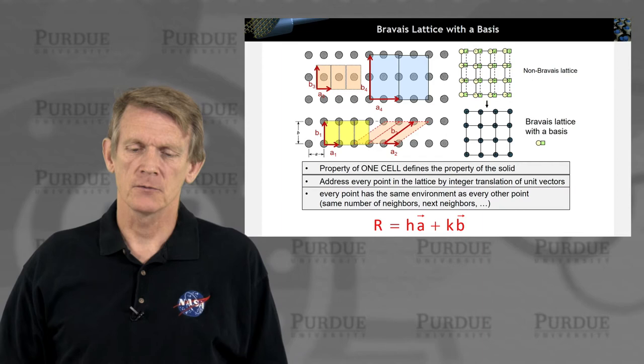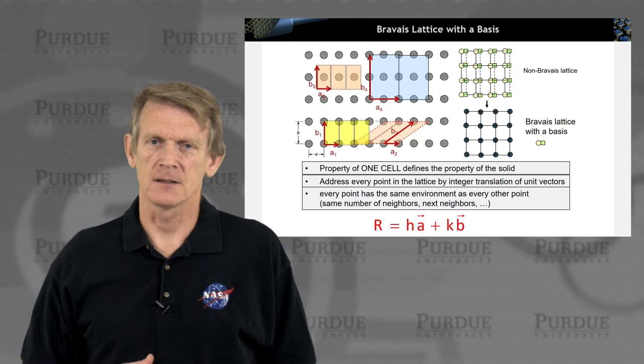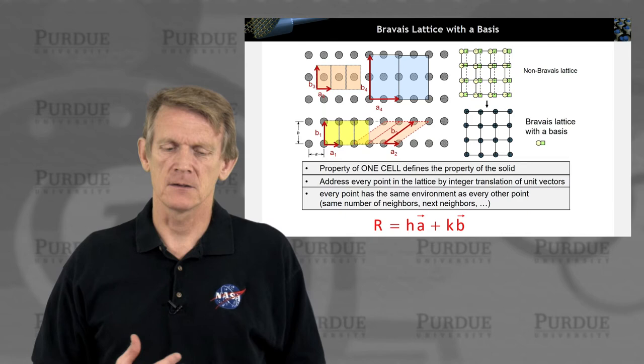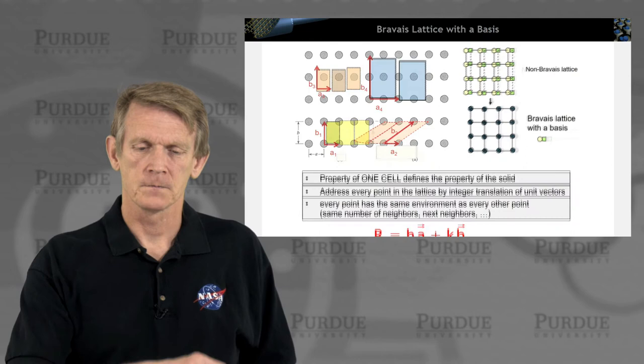What you can do is you convert this into a Bravais lattice like this, where the lattice point has a basis. And the basis then is repeated in this lattice. And within that lattice, every connection has the same chemical relationship, the same geometry, etc. So that is how we define a Bravais lattice with a basis.